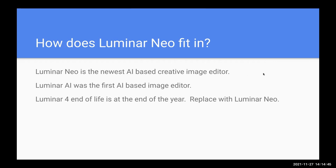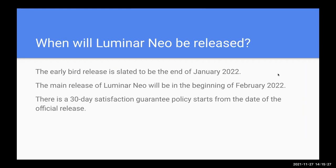Luminar 4 is end of life at the end of this year — in their slides they say to replace it with Luminar Neo. Luminar 4 had layers where Luminar AI did not, and Luminar Neo will have layers when it comes out. You can compare it loosely: Luminar Neo is like Photoshop with layers, and Luminar AI is like Lightroom without layers. The early release was slated for end of January, with the main release of Luminar Neo at the beginning of February 2022. Skylum has a full 30-day satisfaction guarantee starting from the official release date.